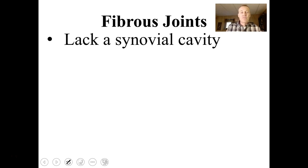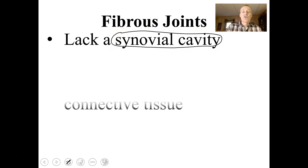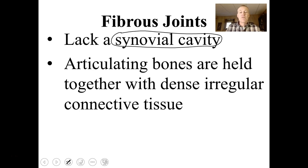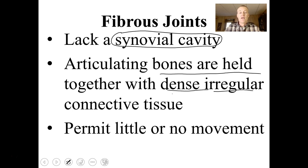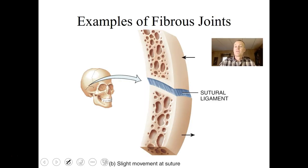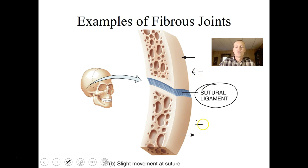The first type is a fibrous joint. The fibrous joint lacks a synovial cavity — a fluid-filled cavity. The articulating bones are held together with dense irregular connective tissue, and it permits little or no movement. A good example would be the suture between your cranial bones. You can see the sutural ligament made of dense irregular connective tissue connecting bone to bone. There's a little bit of movement that can occur, but eventually the sutures will fuse together.